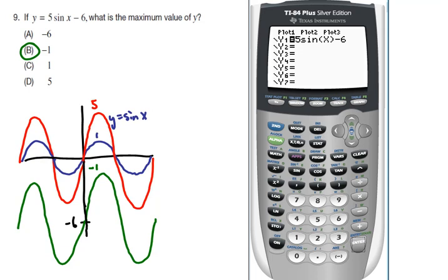And with trig functions, one thing that I like to do is to zoom trig, which is option number 7, under zoom. And you can see that we have the function here, we're looking for the maximum value.